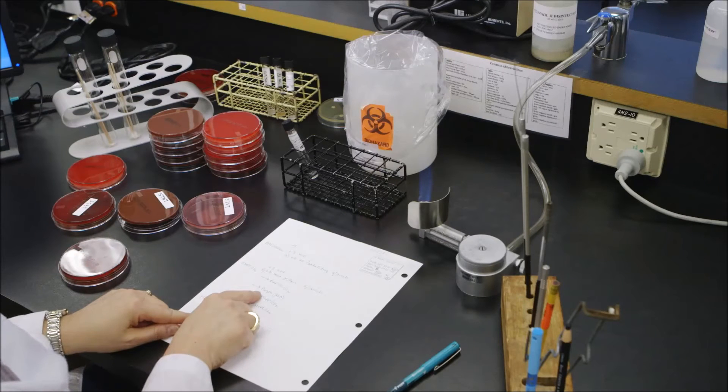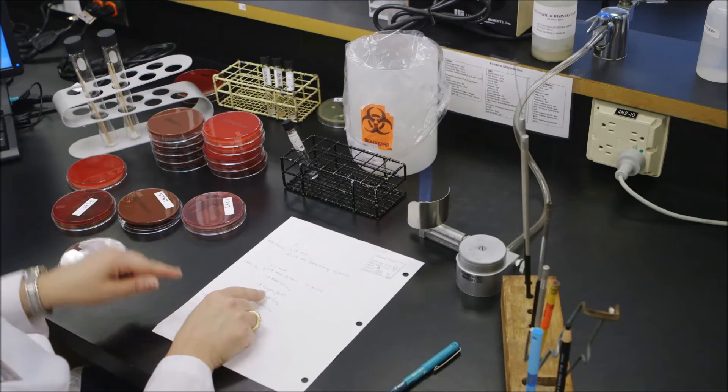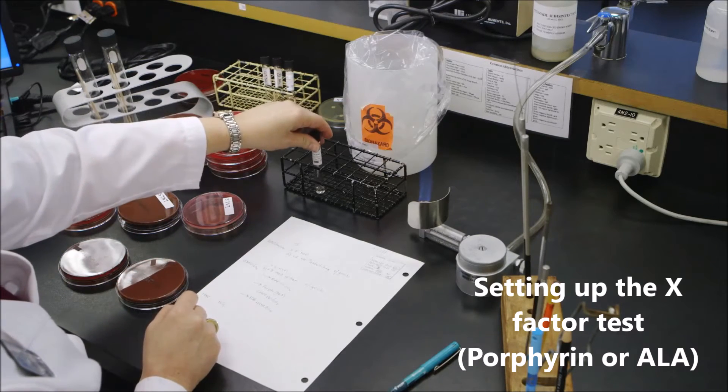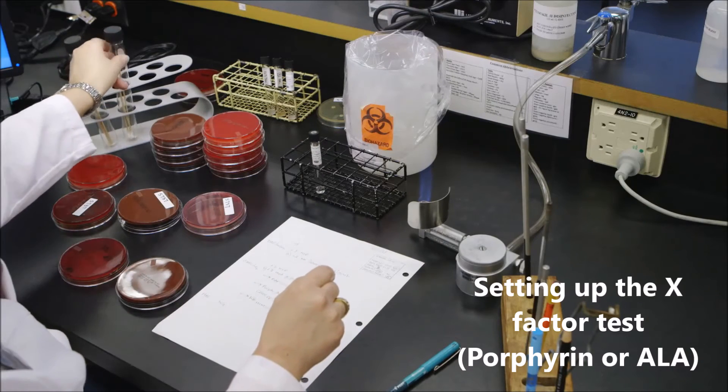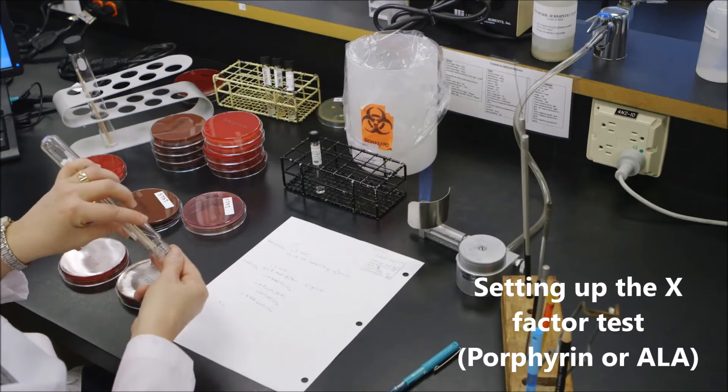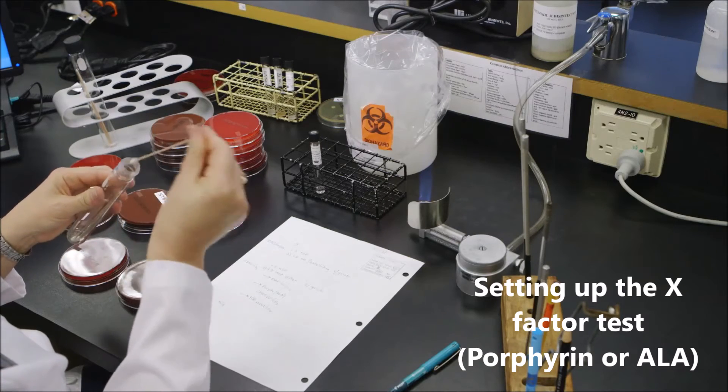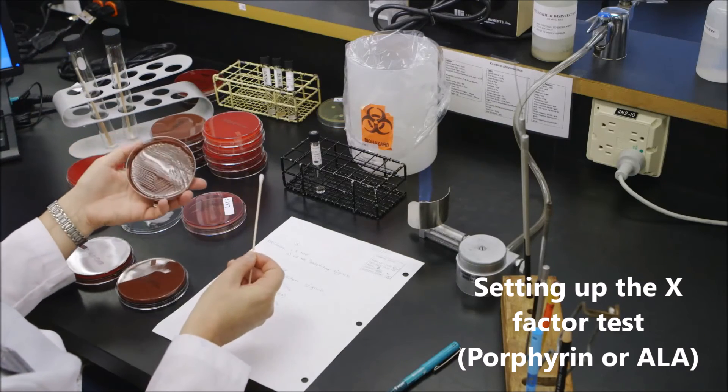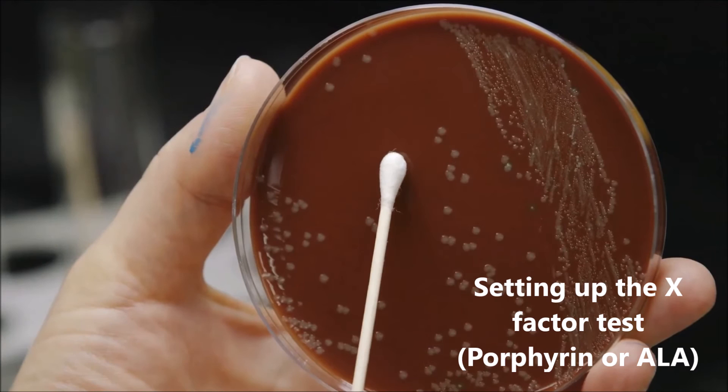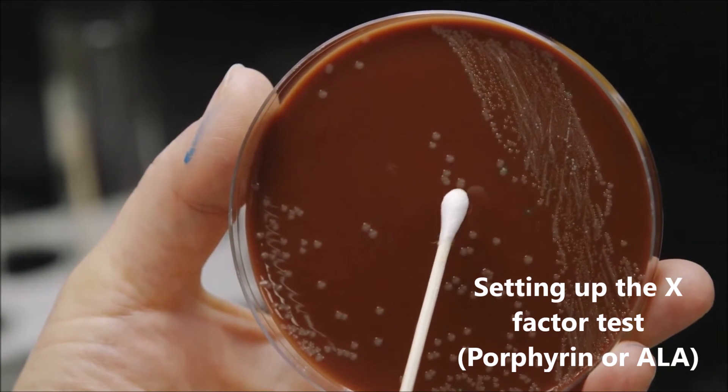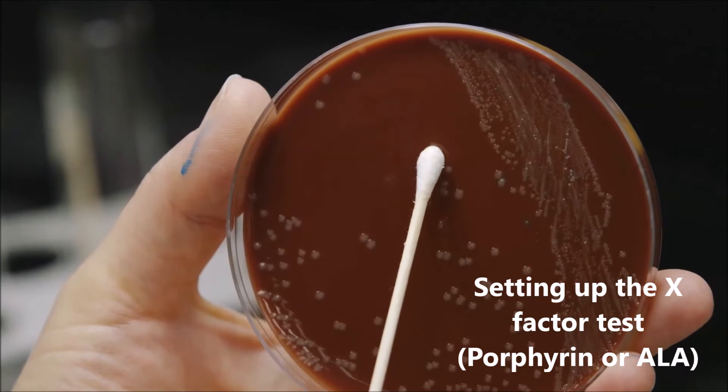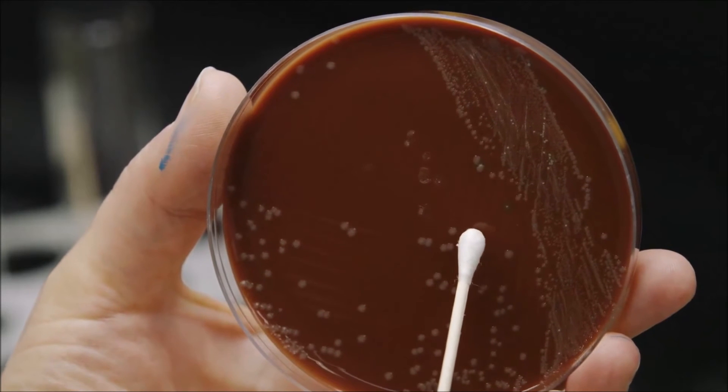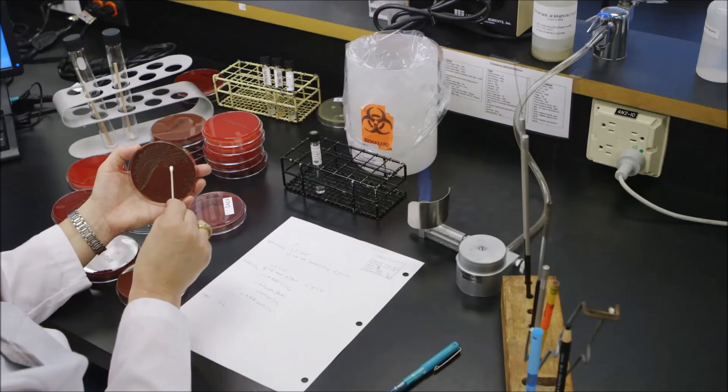The next test to do is the porphyrin with a chocolate plate purity plate. Porphyrin can be inoculated with a swab. It has to be a heavy growth, so you do need to take a few colonies. When you're using a swab, be very careful that you don't touch any other colonies on the plate that don't look like the Haemophilus colony.